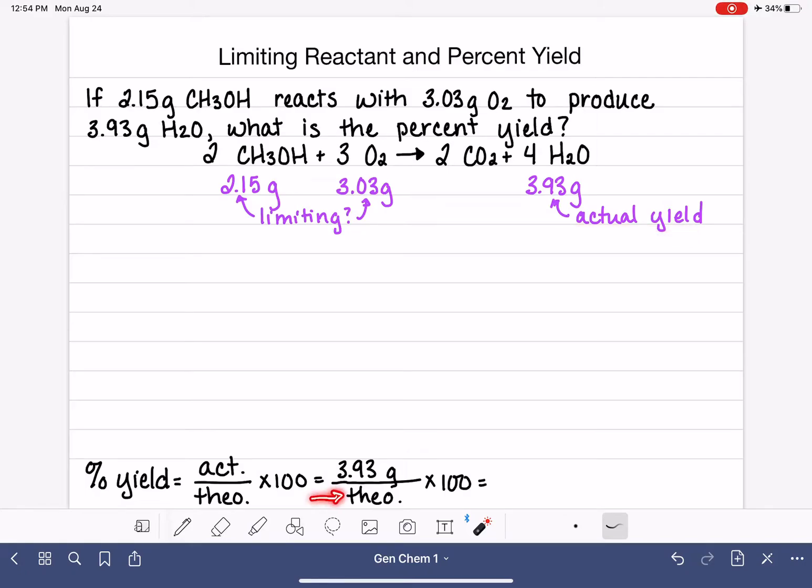The theoretical yield, on the other hand, this is a number that we do calculate using stoichiometry. We calculate the theoretical yield from the limiting reactant. So this is where it turns into a limiting reactant problem.